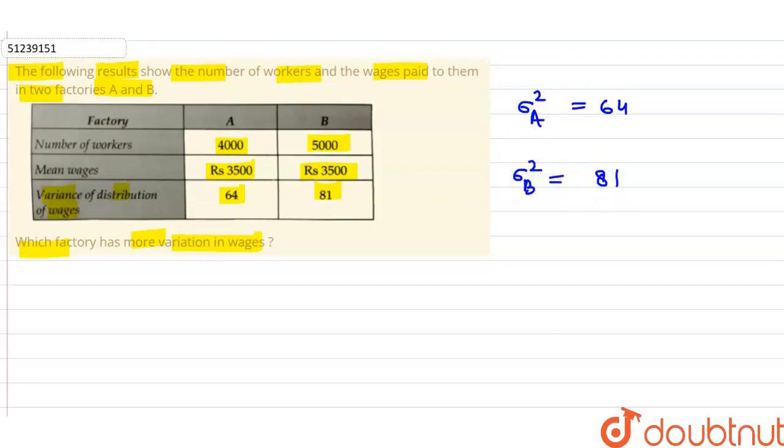Now, the variance is given. We can find the standard deviation. So, the standard deviation for factory A, how much will it be? The square root of sigma A, which is the square root of 64. How much will it be? 8.